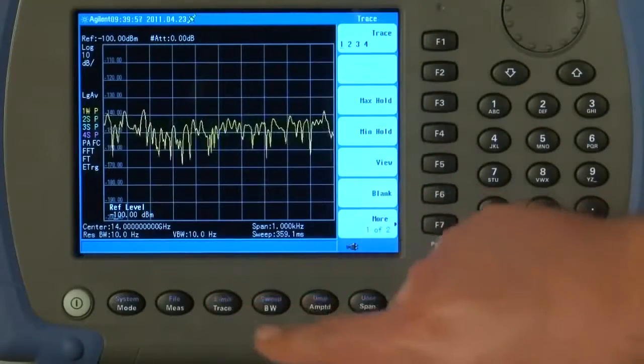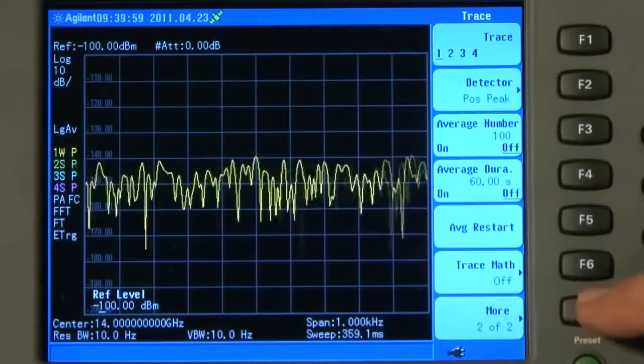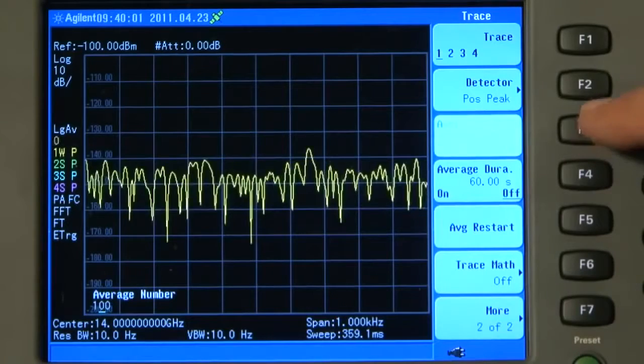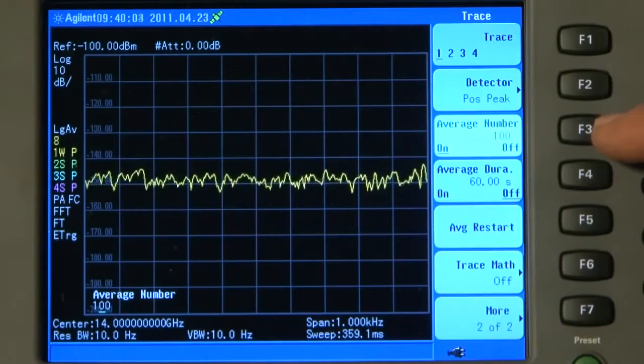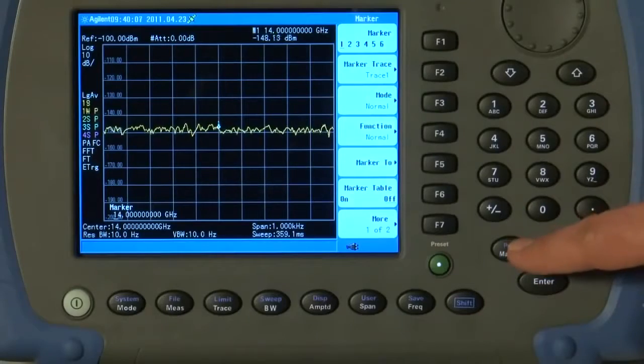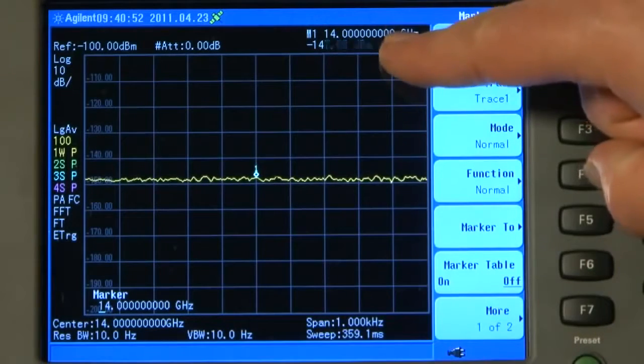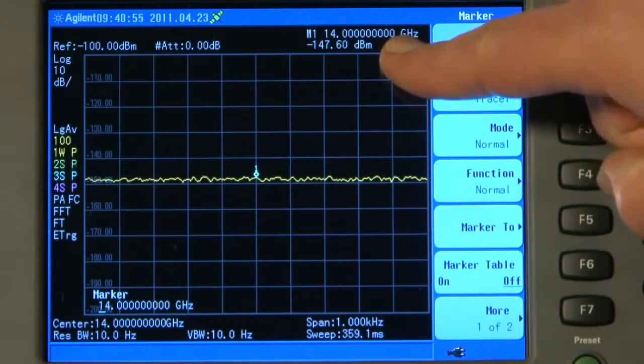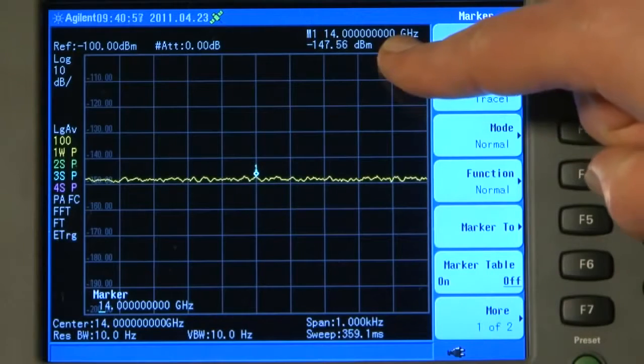I will press the Trace button and press More, and we will turn Averaging on, and I will turn on a marker. And you can see here, we have got a displayed average noise level, or sensitivity, of around minus 147 dBm.